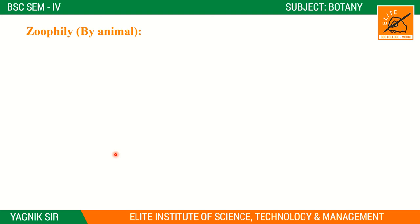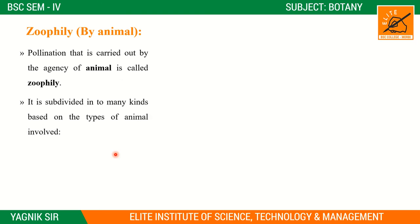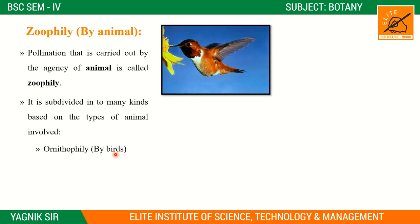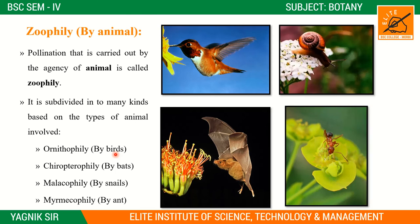Then comes zoophily — pollination by animals. Pollination carried out by the agency of animals is called zoophily. It is subdivided into types: by birds (ornithophily), by bats (chiropterophily), by snails (malacophily), and by ants (myrmecophily).